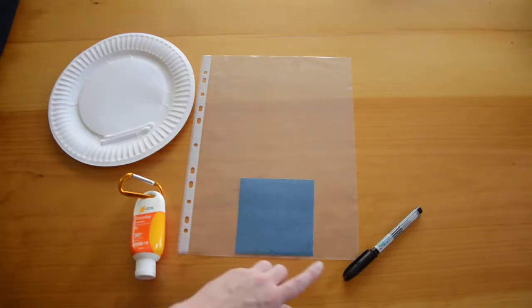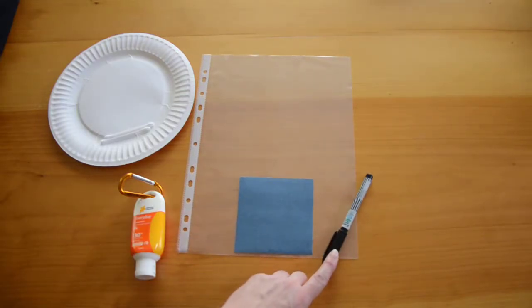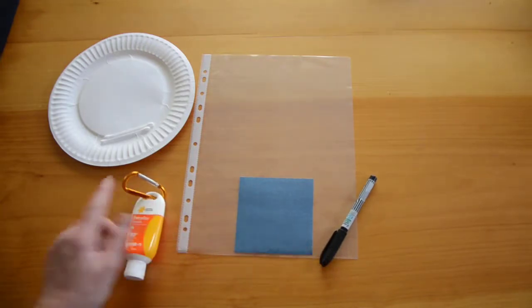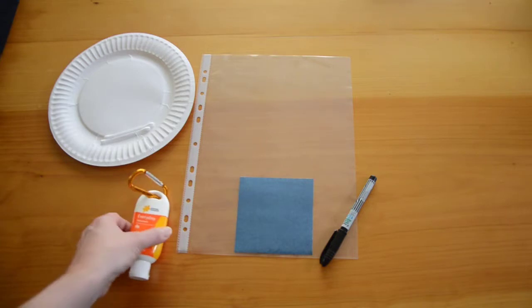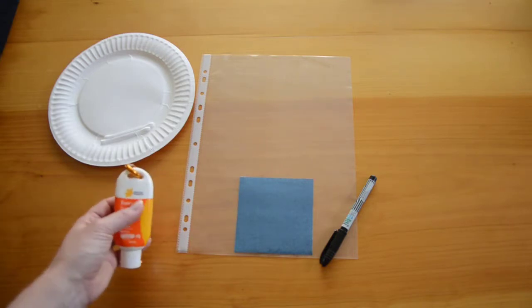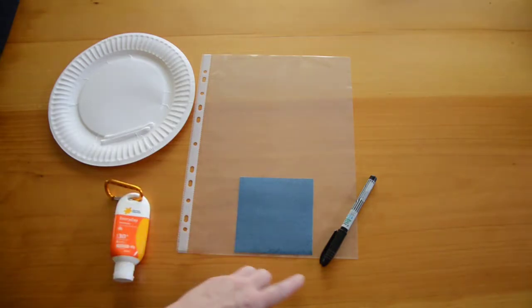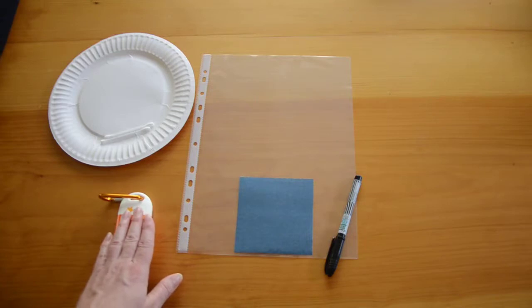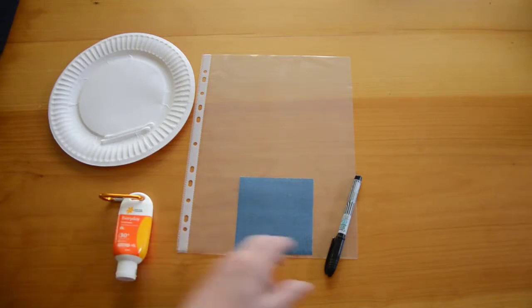The one thing to warn students about is that you can actually lift off permanent marker with sunscreen because of the solvents that the two compounds actually lift each other. So if you ever accidentally get permanent marker on a plastic surface or some surface that is not porous, you can use sunscreen to lift it off. And it doesn't work on wood because it's porous.